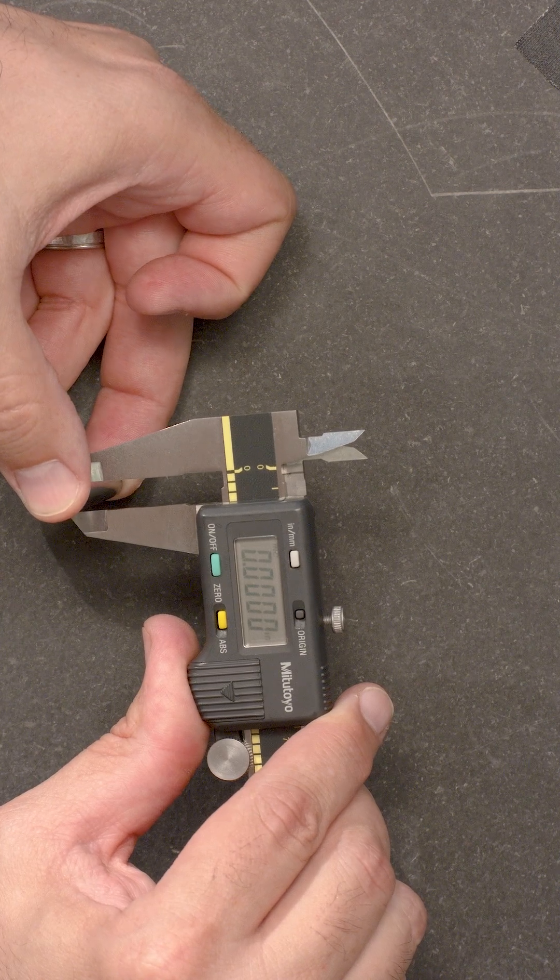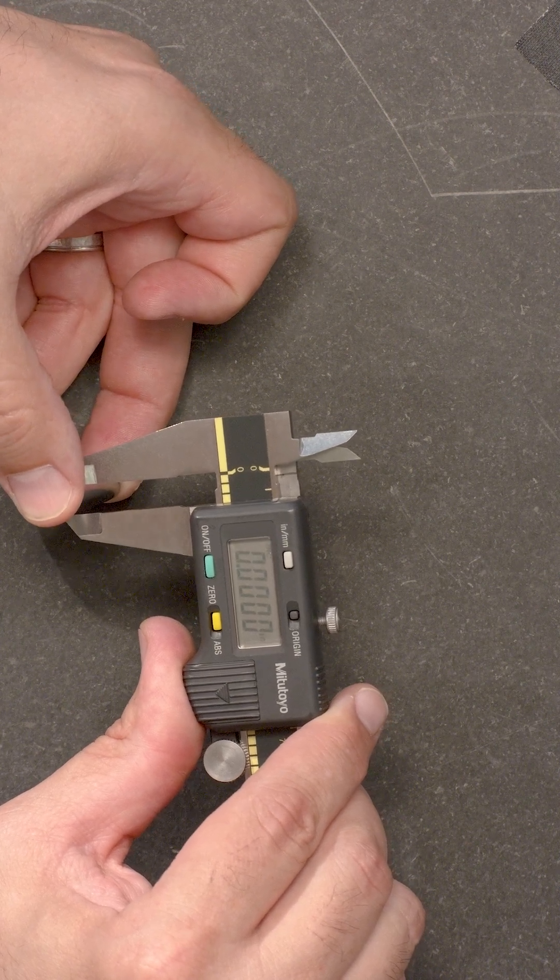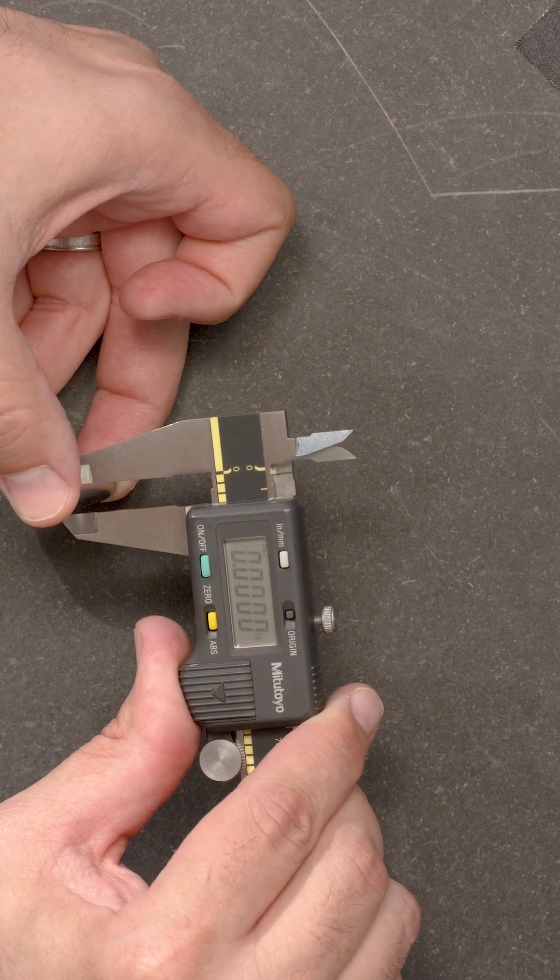Here, all the values are zero, so we know that the flatness and parallelism of the jaws are in good shape.